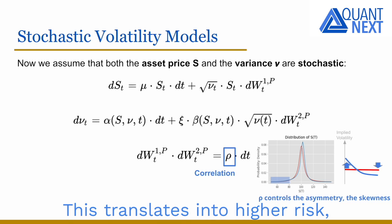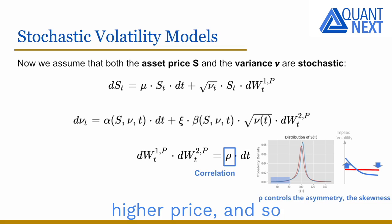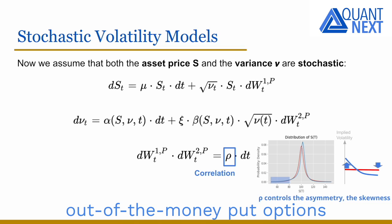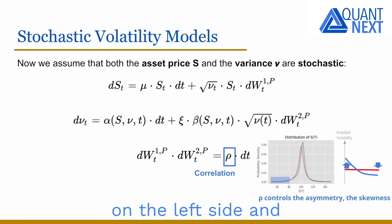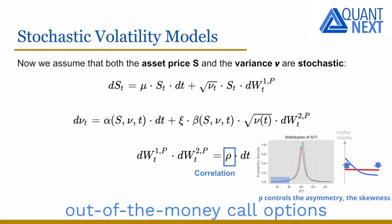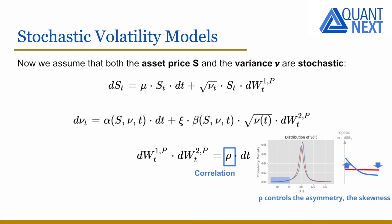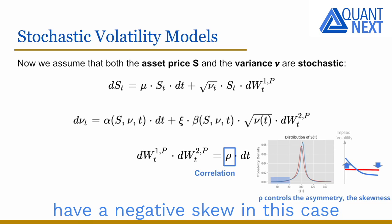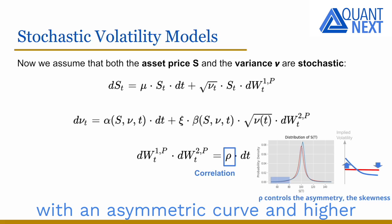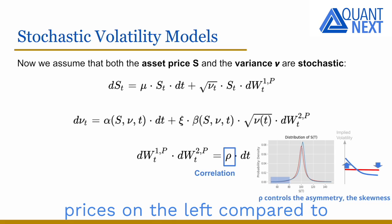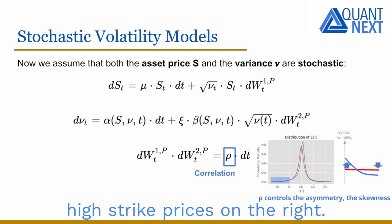This translates into higher risk, higher price and so higher implied volatility for out-of-the-money put options on the left side, and lower risk, lower price and so lower implied volatility for out-of-the-money call options on the right side. The implied volatility is said to have a negative skew in this case, with an asymmetric curve and higher implied volatility for low strike prices on the left compared to high strike prices on the right.